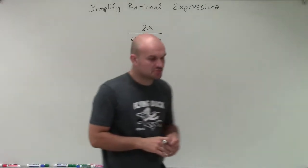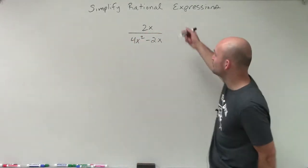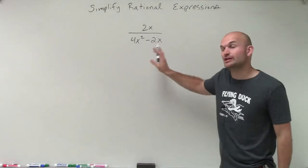OK, so now we're given a rational expression that has a monomial at the top, but we have a binomial that is separated by subtraction in our denominator.